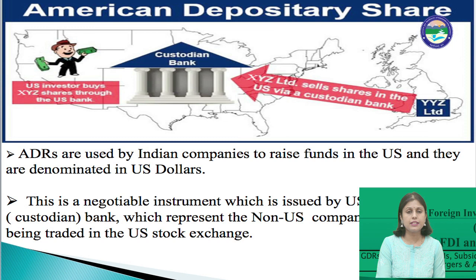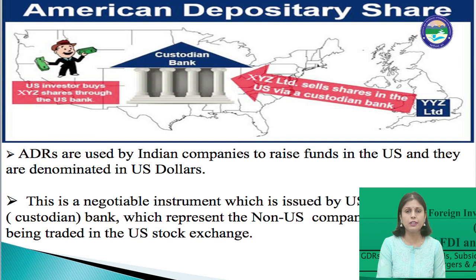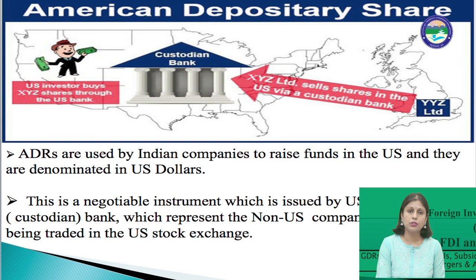The next financial instrument is American Depository Receipts, or ADRs. ADRs are used by Indian companies to raise funds in the US market only and are denominated in US dollars. An ADR is a negotiable instrument issued by a US depository bank representing the non-US company stock being traded on the US stock exchange. Indian companies are able to trade in the US stock market through this financial instrument, and they are listed on American stock exchanges such as the New York Stock Exchange and NASDAQ. The procedure to issue ADRs is the same as for GDRs.